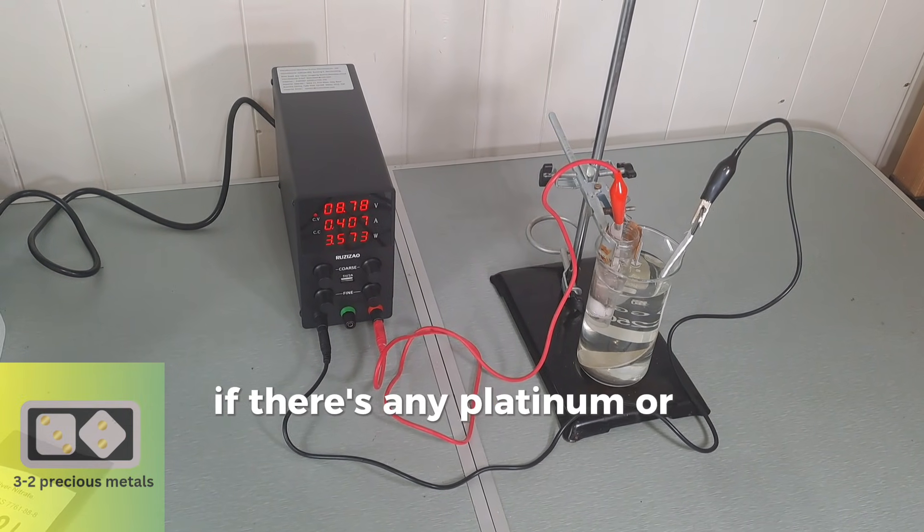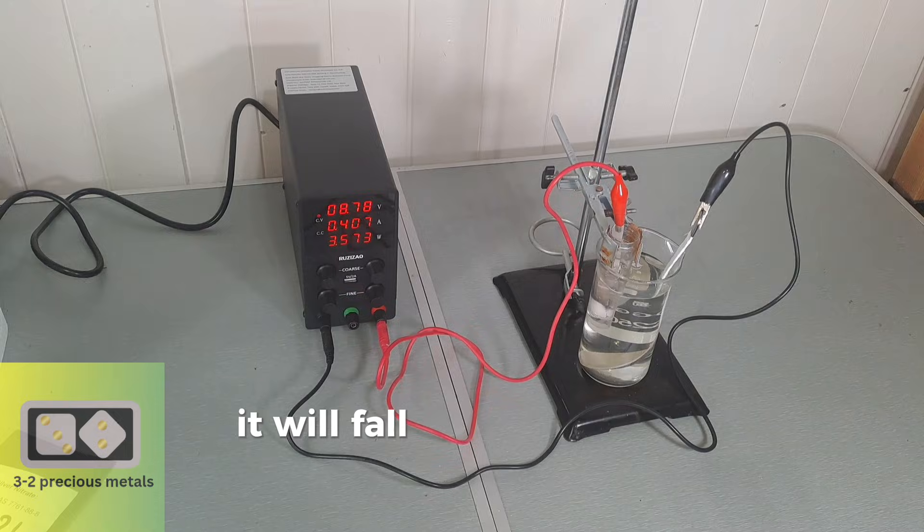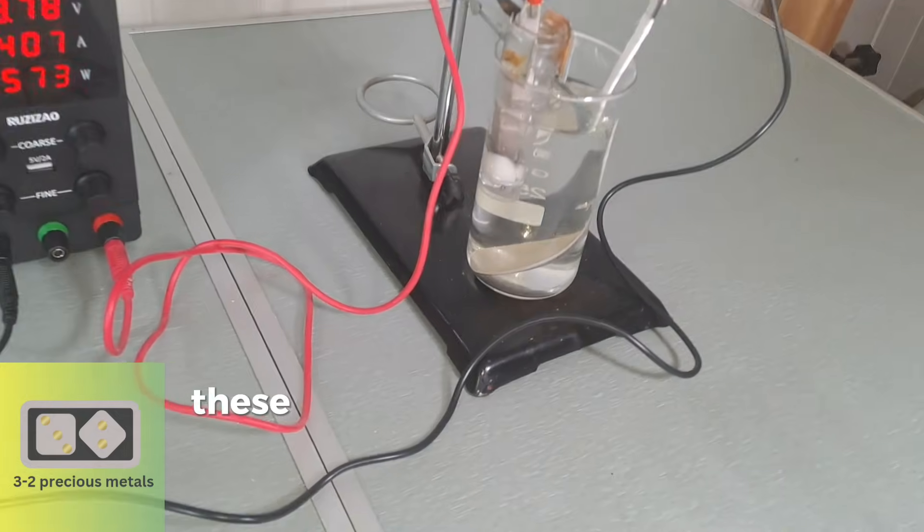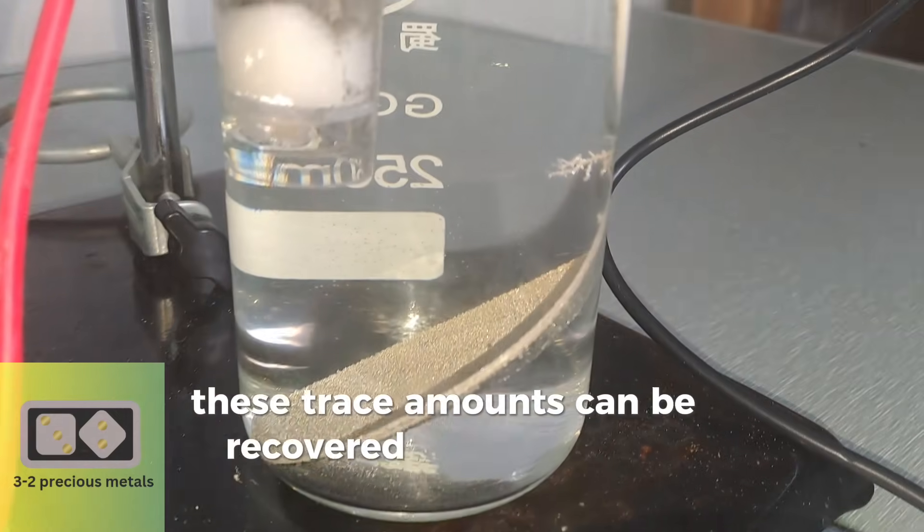If there's any platinum or palladium in the anode, it will fall into the filter. These trace amounts can be recovered at a later date.